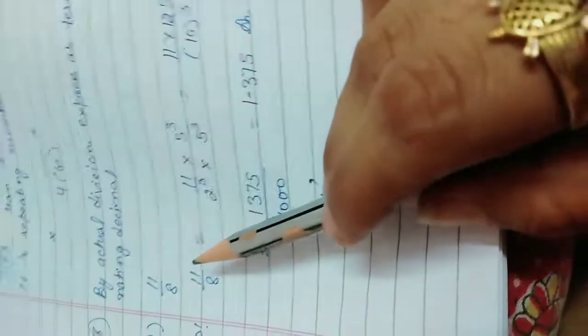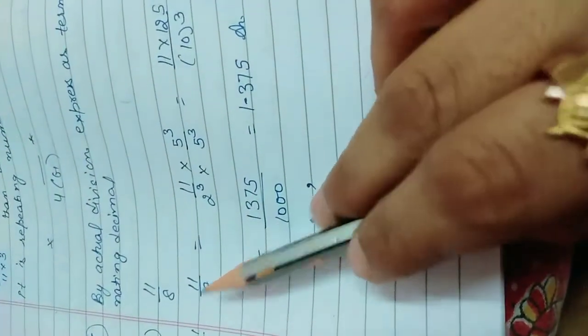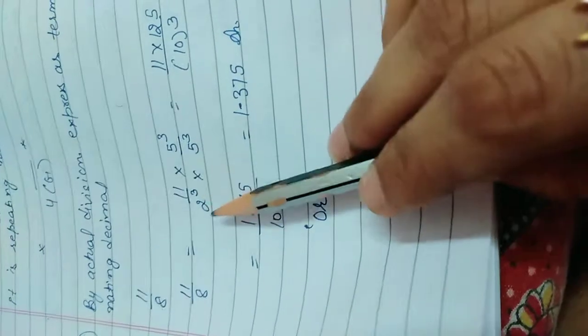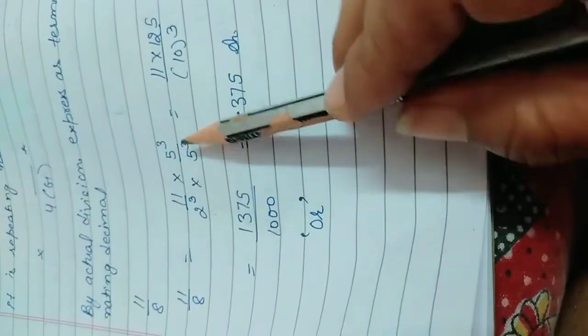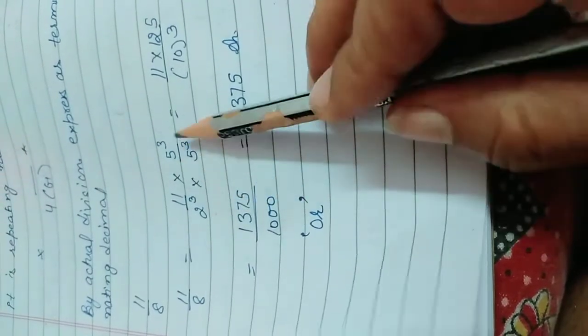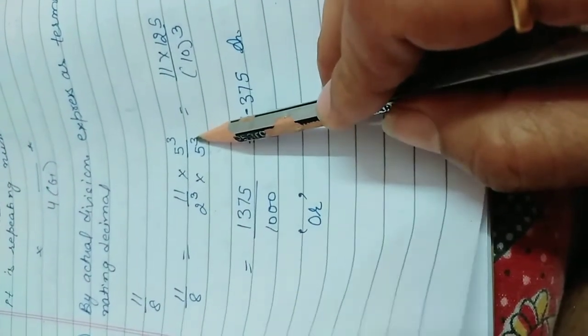Our second type of question is division by division, show it by division. Now there are 2 methods that I have already told you. 11 by 8, so 8 is what? 2 cube. If it is 2 cube, we have to multiply with 5 cube to make the same 5 to the 10 with the same power 3.